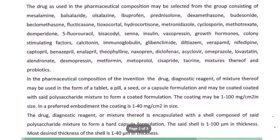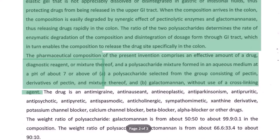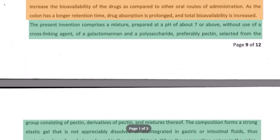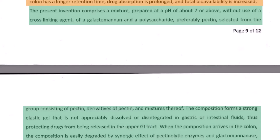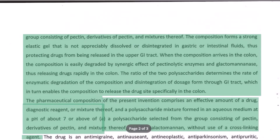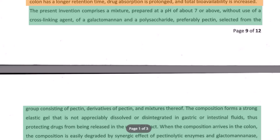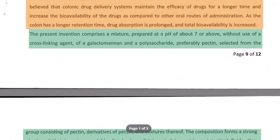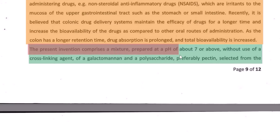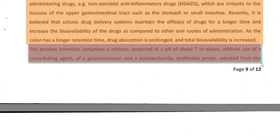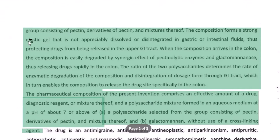Ideally we would have moved towards the brief description of drawings, but in this case there is no drawing provided, so we directly move to the description section. We say: 'The present invention will now be described in detail with reference to the accompanying claims, because there are no drawings.' We can start again with: 'The present invention comprises a mixture,' because we need to talk about the mixture as well.